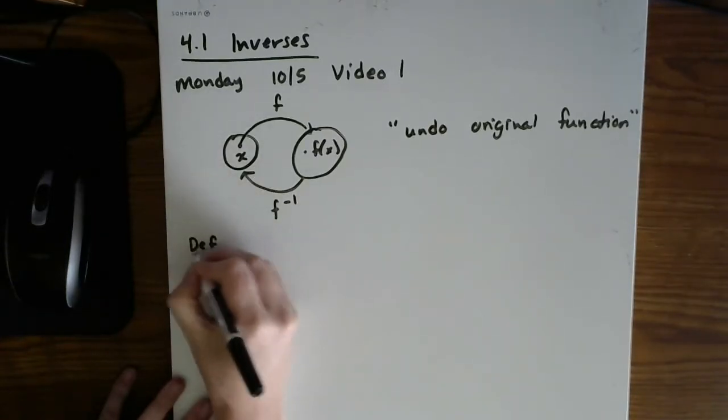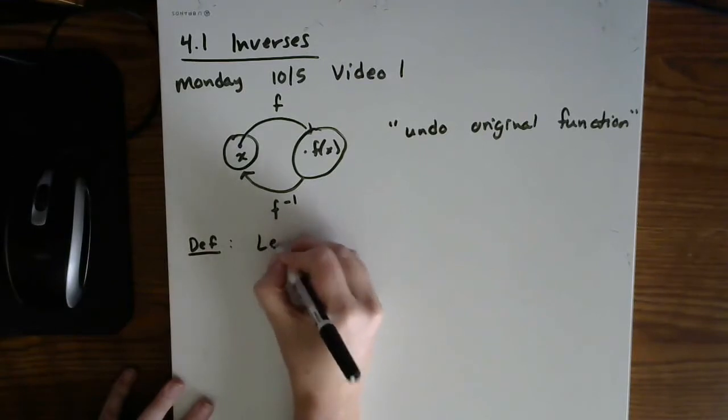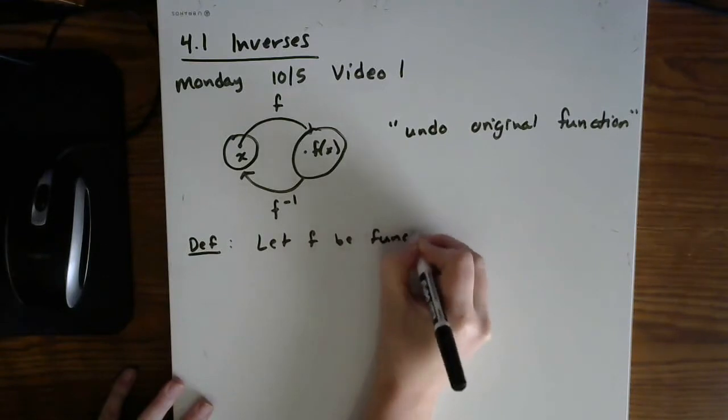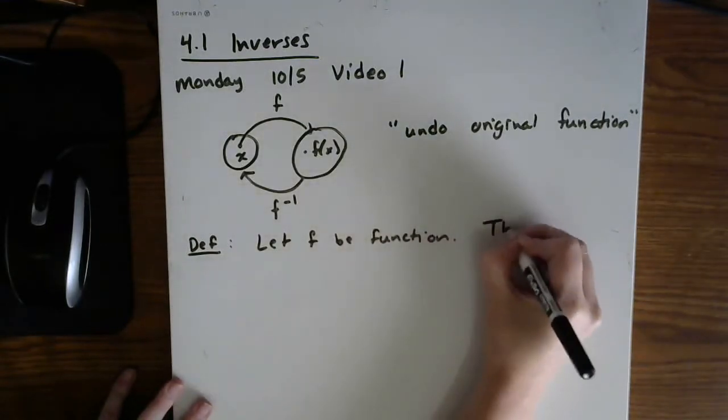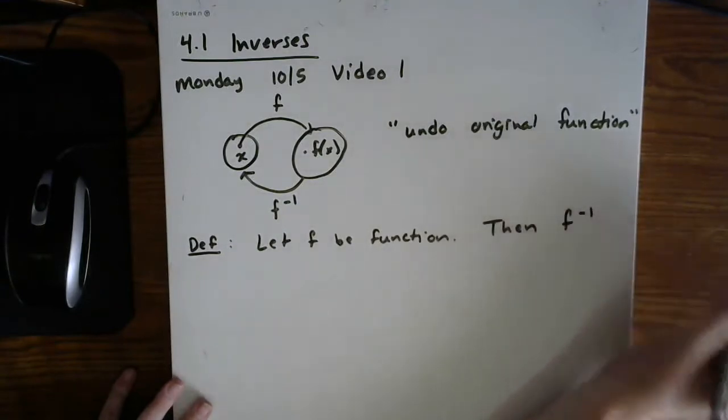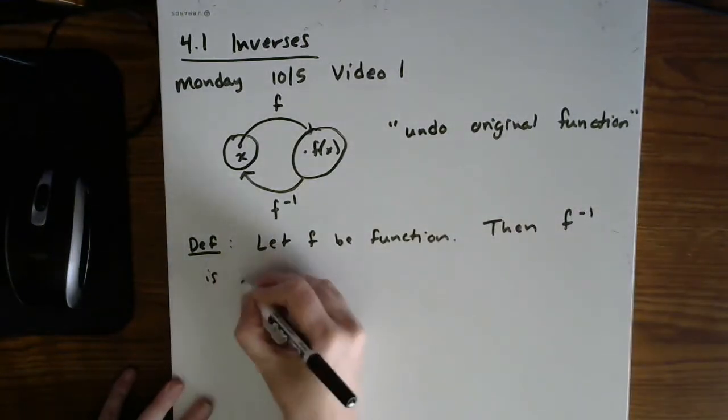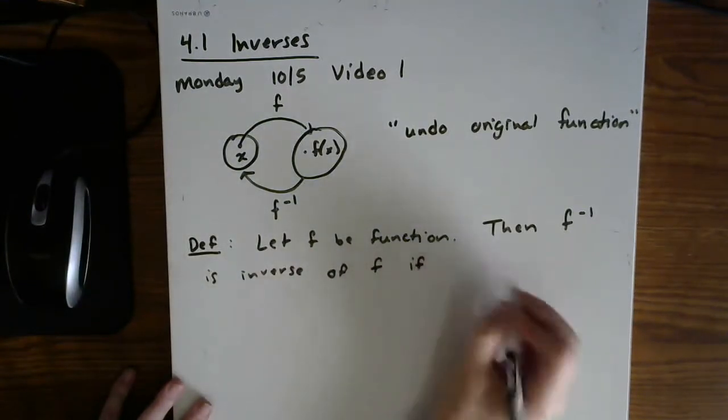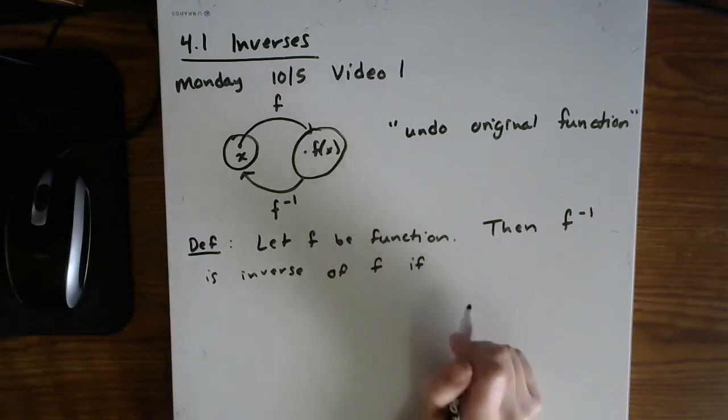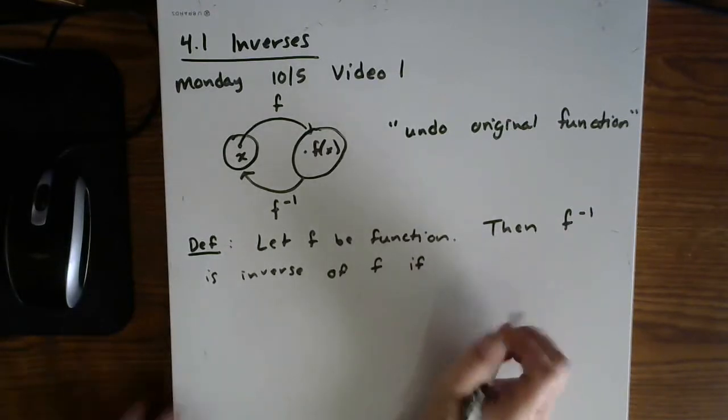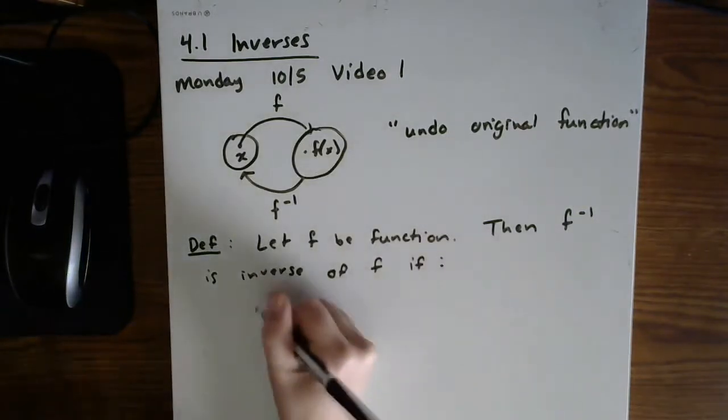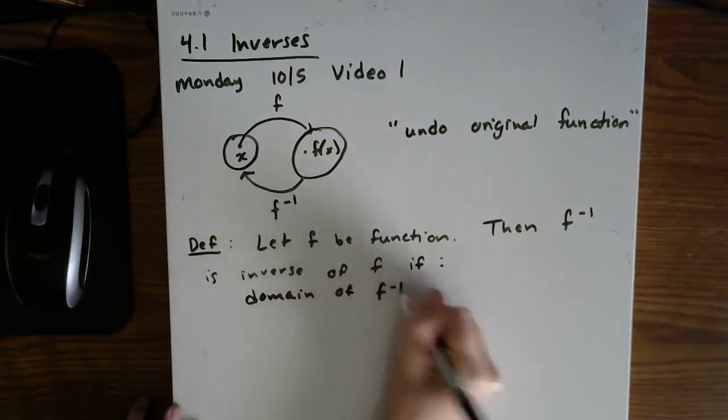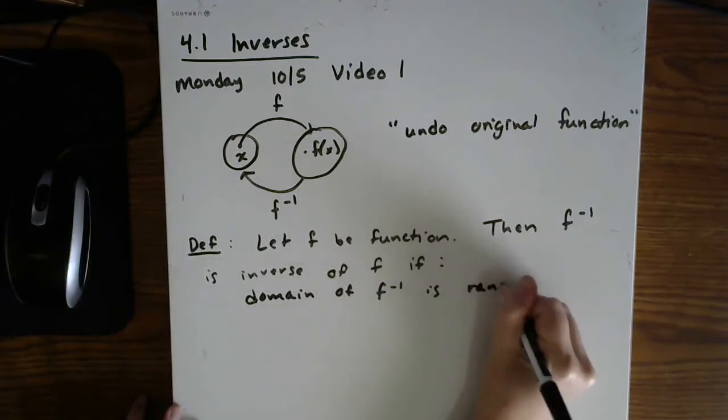So let's write the formal definition down. Let's let f be the original function. Then we will say that f inverse is the inverse of f if, and here's where the definition gets a little bit tricky. First of all, the domain of the inverse is the range of the original.